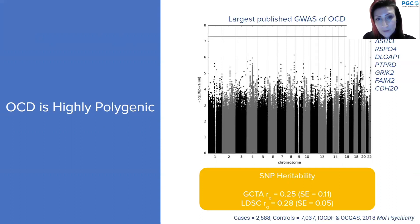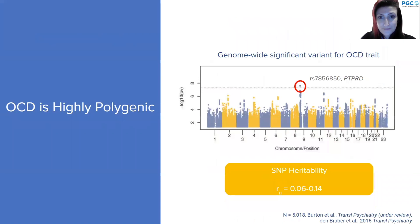SNP heritability estimates from this study were around 25%, consistent with previous studies. There is also a very large meta-analysis of OCD GWAS forthcoming from the PGC-OCD group with some very promising results that will hopefully be published soon.